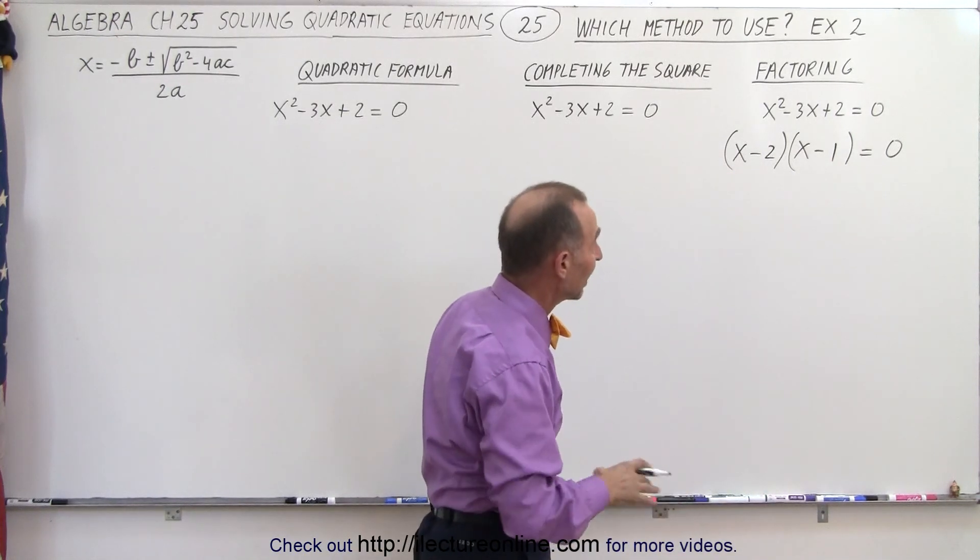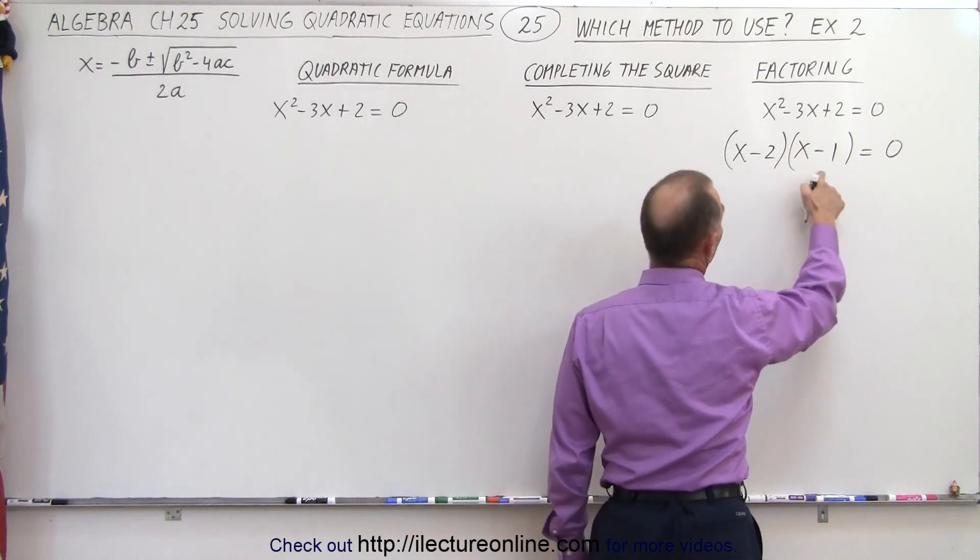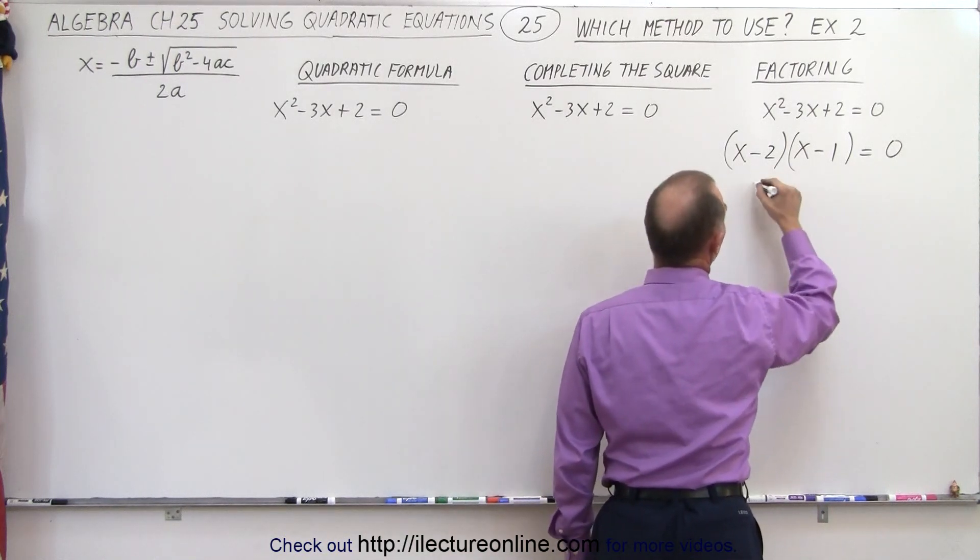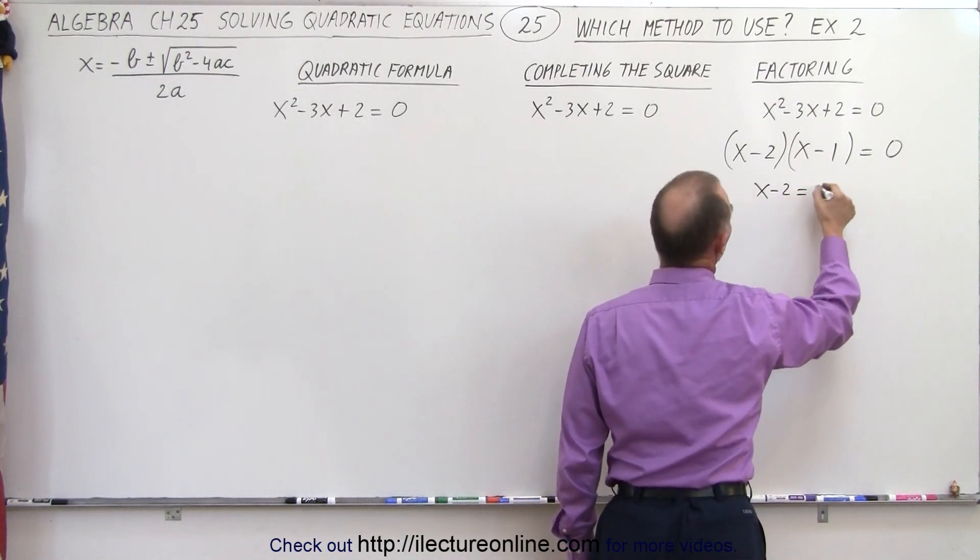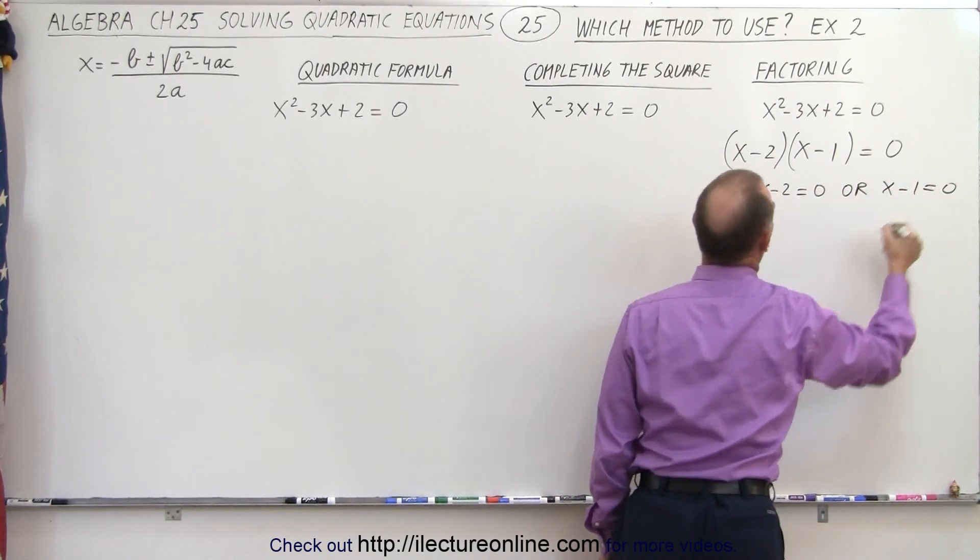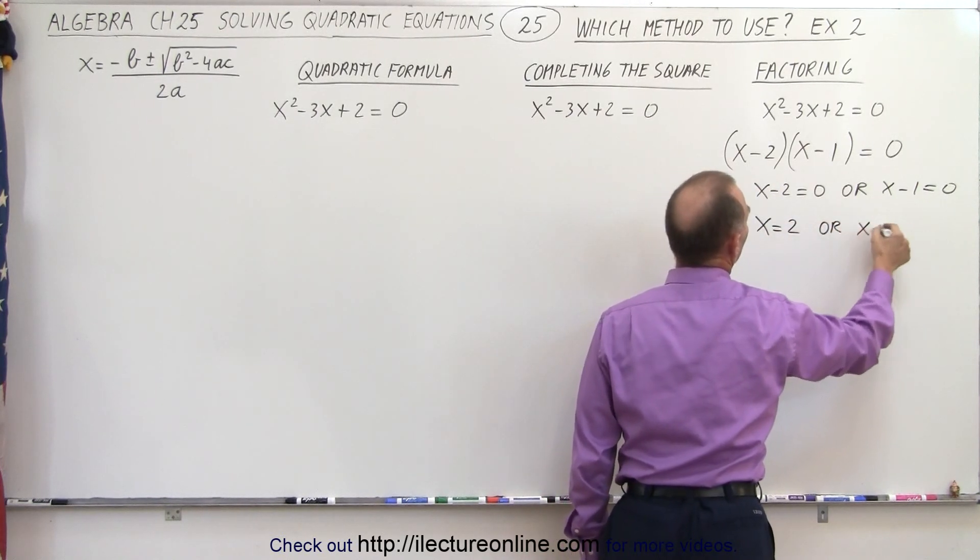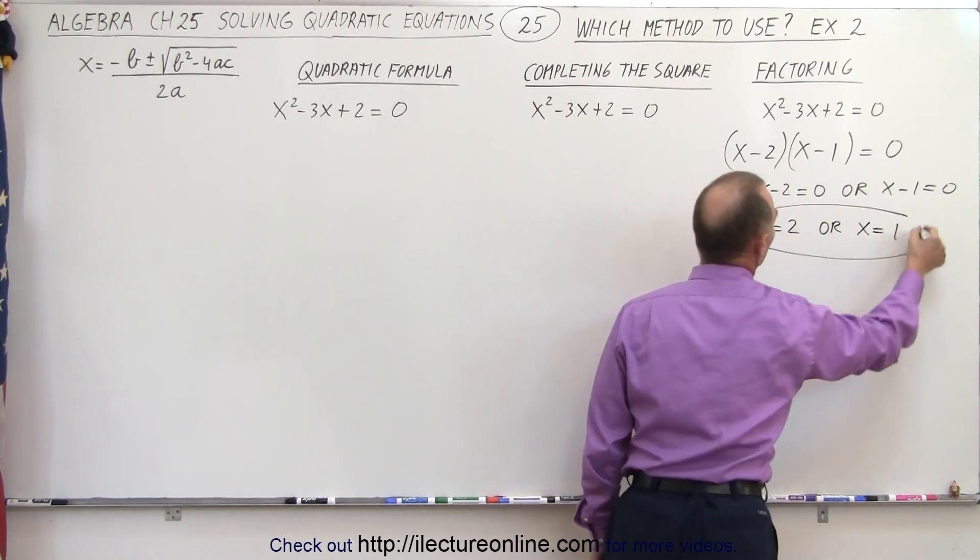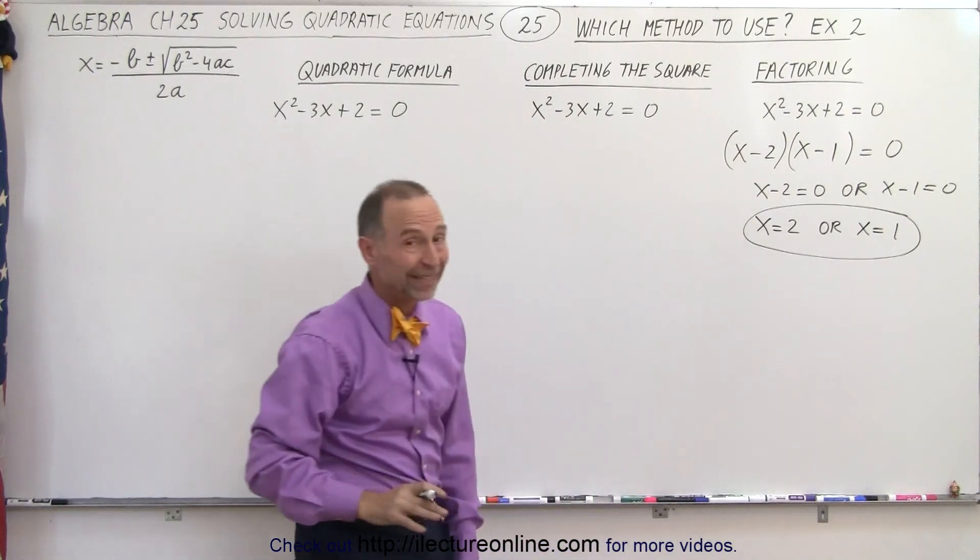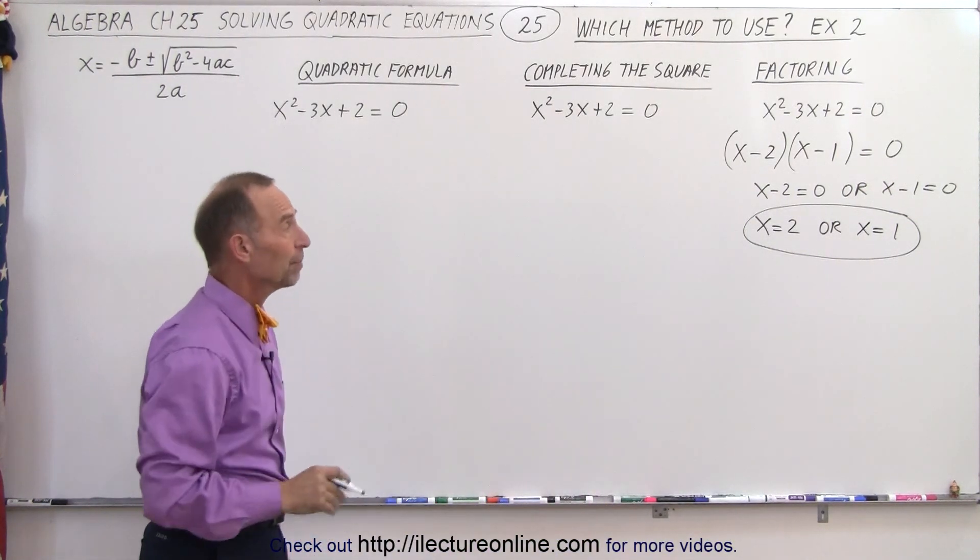And notice that means it is factorable, and therefore I can write when I have the product of two binomials that equal 0, that either X minus 2 is equal to 0, or X minus 1 is equal to 0, which means that X equals 2 or X equals 1 as the two solutions to my quadratic equation. That was pretty quick, so you can see that if it's factorable, that's a pretty good method.